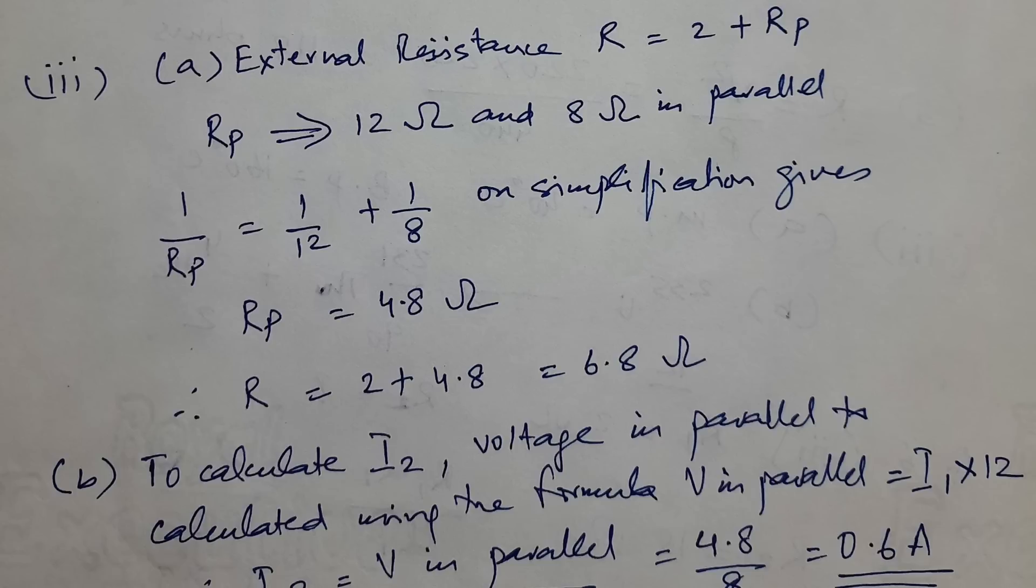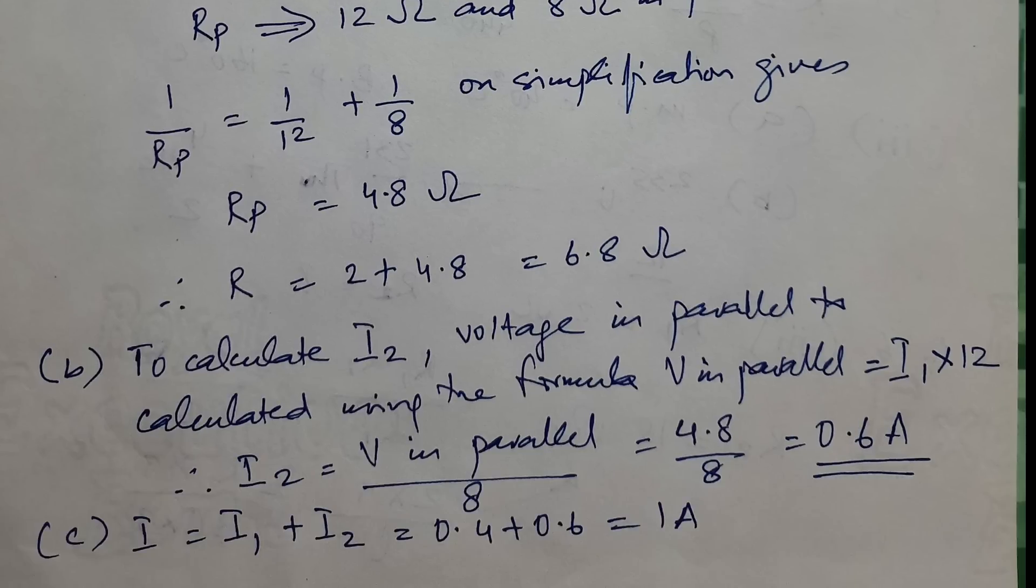Now we move to the third one and this is how it has to be calculated. The entire thing: the external resistance of circuit, the current I2 and the current I. This is the way the entire thing has to be calculated.